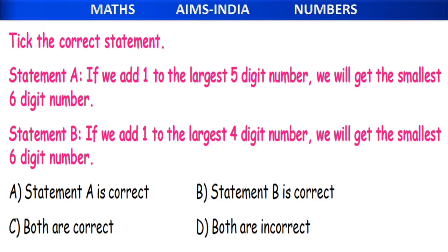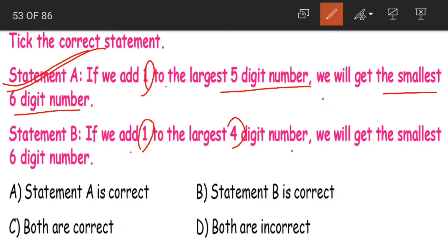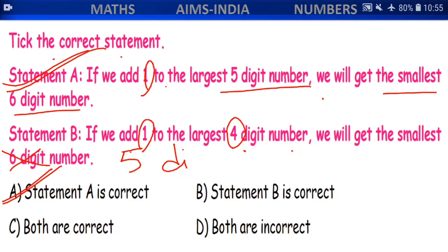Next, tick the correct statement. Statement A: if we add 1 to the largest 5-digit number, we will get the smallest 6-digit number. Statement B: if we add 1 to the largest 4-digit number, we will get the smallest 6-digit number. Looking at Statement A — adding 1 to the largest 5-digit number does give us the smallest 6-digit number, so it is correct. But Statement B is wrong — adding 1 to the largest 4-digit number gives the smallest 5-digit number. So again, only Statement A is correct, that is option A.